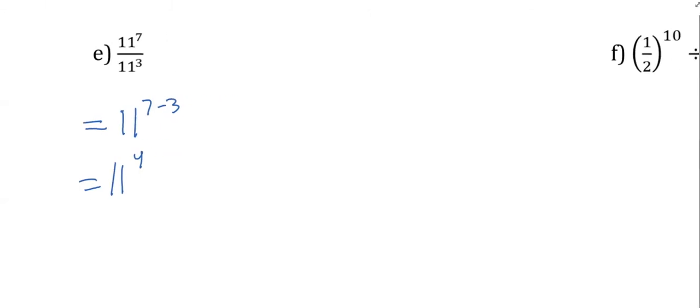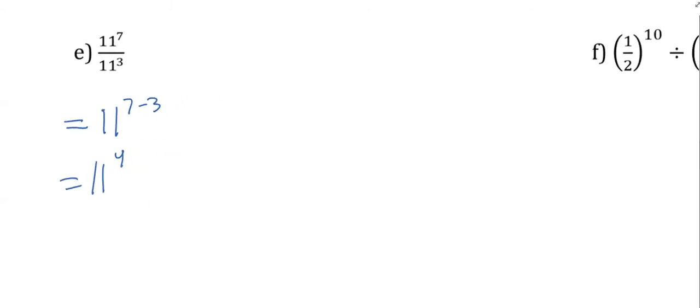11 to the seven divided by 11 to the three. Sarah, what do you think? Very nice. So it's 11 to the seven minus three, which is 11 to the four. That's something you've got to remember. That's going to come up definitely in this unit for the next four days. But these are important rules that you want to always remember, always know.